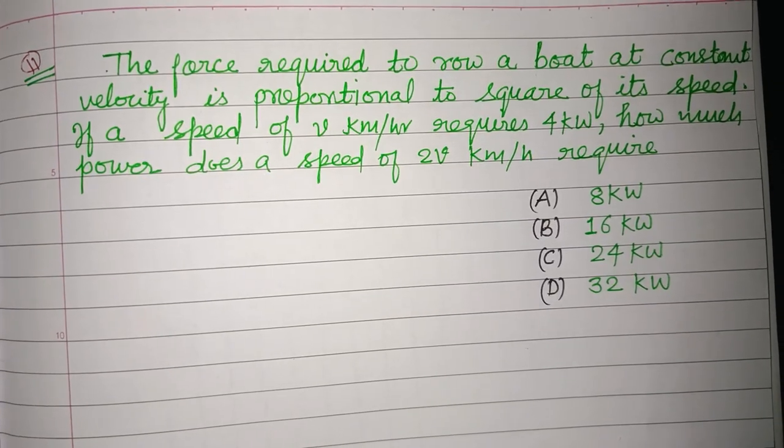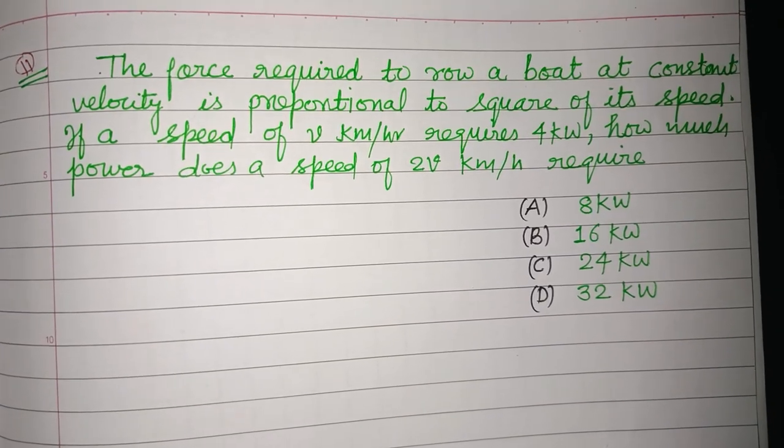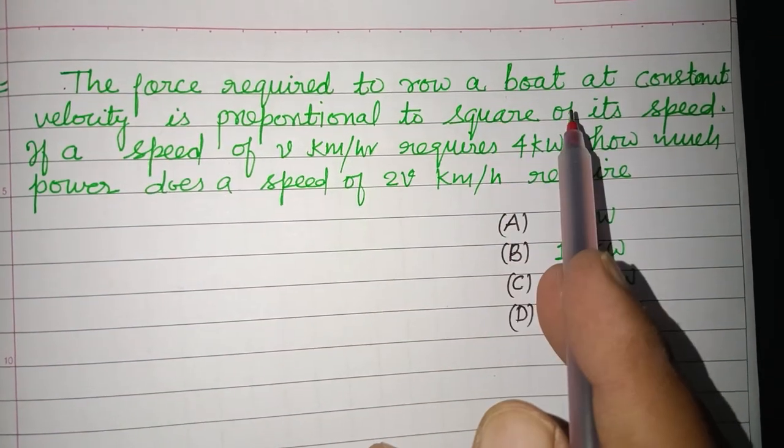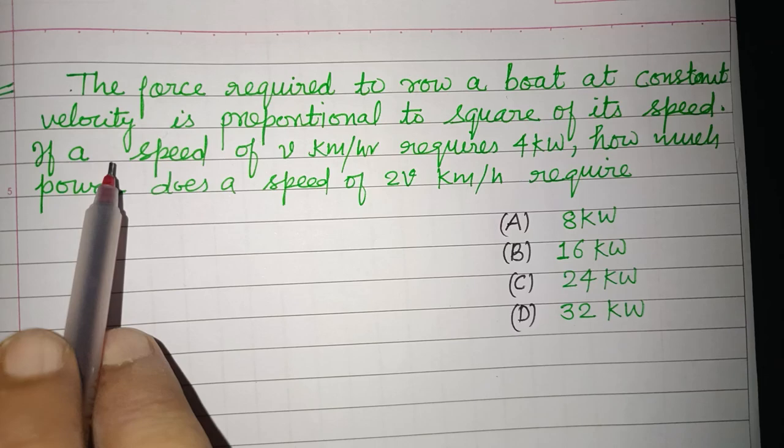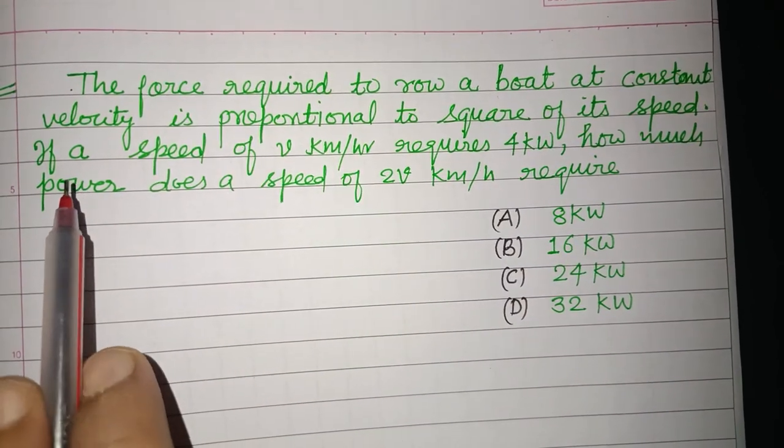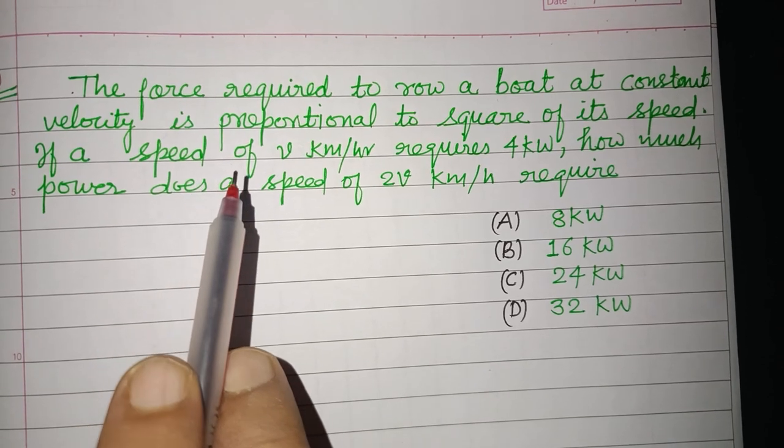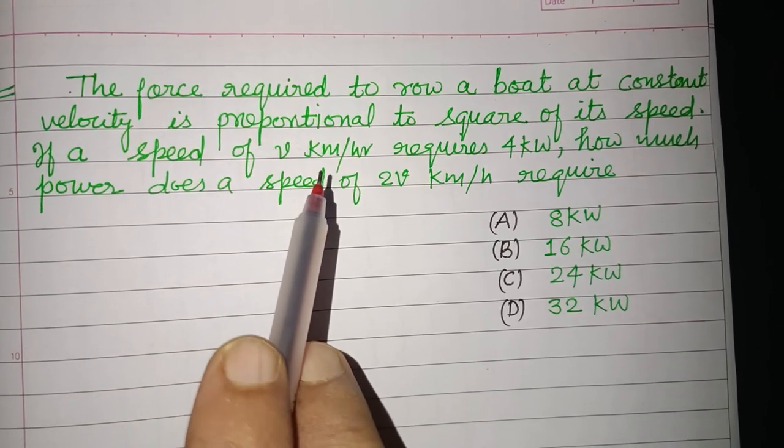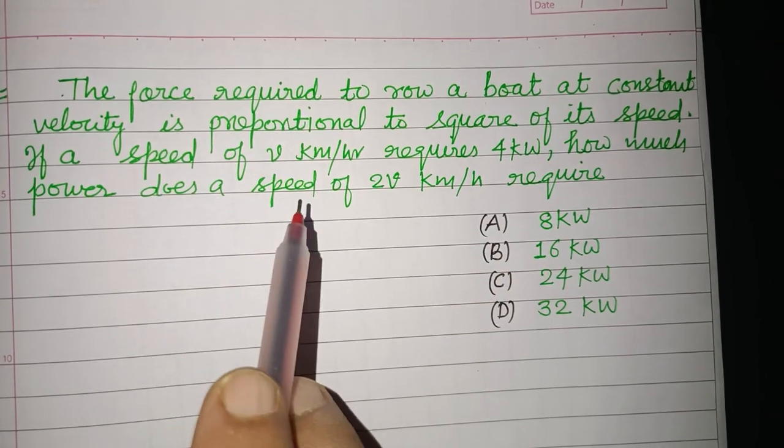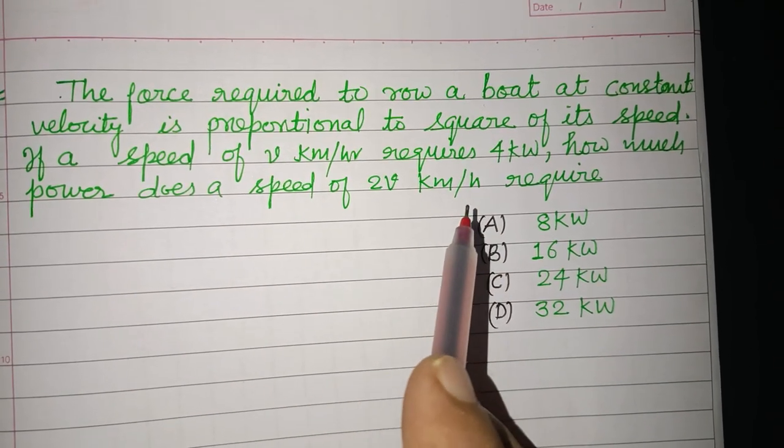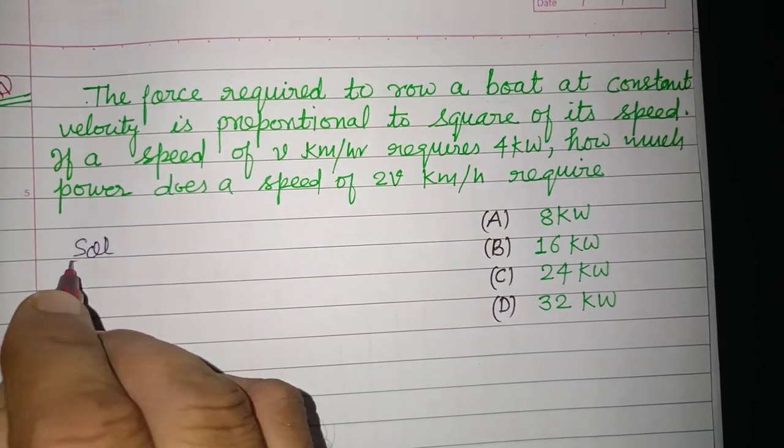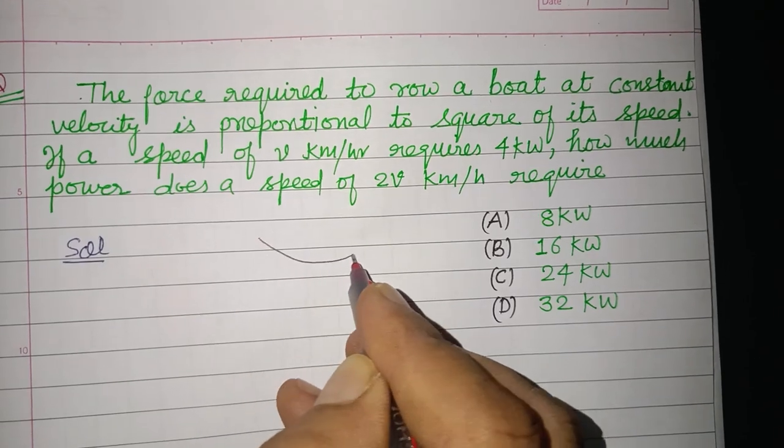Hello viewers, warm welcome. The question is: the force required to row a boat at constant velocity is proportional to the square of its speed. If a speed of V kilometers per hour requires 4 kilowatts, how much power does a speed of 2V kilometers per hour require?